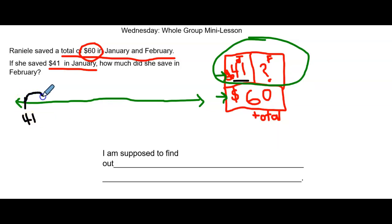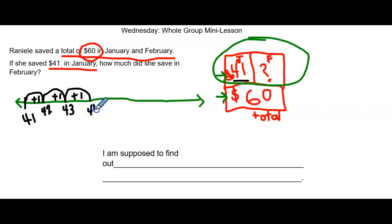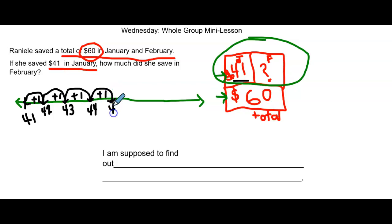Here we go, boys and girls. 41 plus 1 is 42. 42 plus 1 is 43. 43 plus 1 is 44. Boys and girls, are you noticing where I'm writing my numbers? They are right below the line that touches the number line. Make sure you're not writing your number inside of the jump at the bottom. 44 plus 1 is 45. Boys and girls, I see a 5 in the ones place — that's a friendly number.